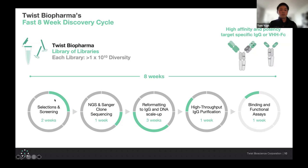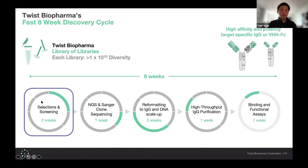In terms of the discovery cycle, we start with the panning selections and screening with our phage display libraries. Typically after this, we'll go into NGS and Sanger clone sequencing. Once we have the identified antibody fragments we want, we reformat those fragments into full IgG, resynthesize those, and scale up the DNA. These get put through high-throughput IgG purification and 96-well deep blocks, then we conduct binding and functional assays. What I'm going to be focusing on in this talk is mainly the selections and screenings and how Loop enables us to expand on this.